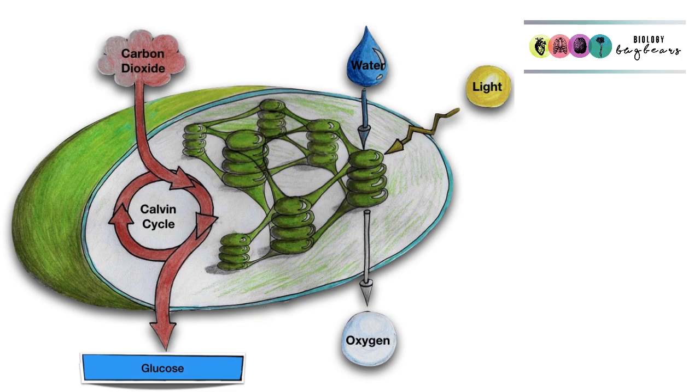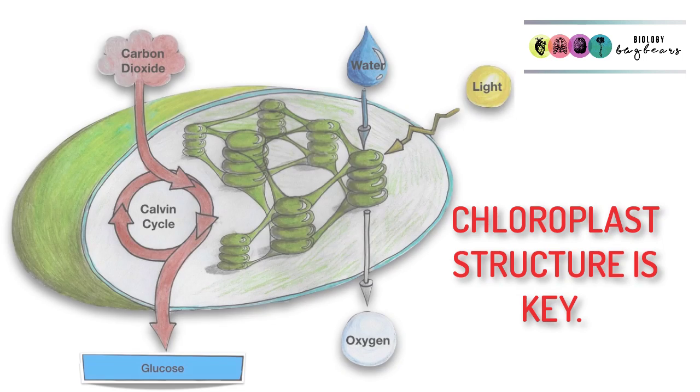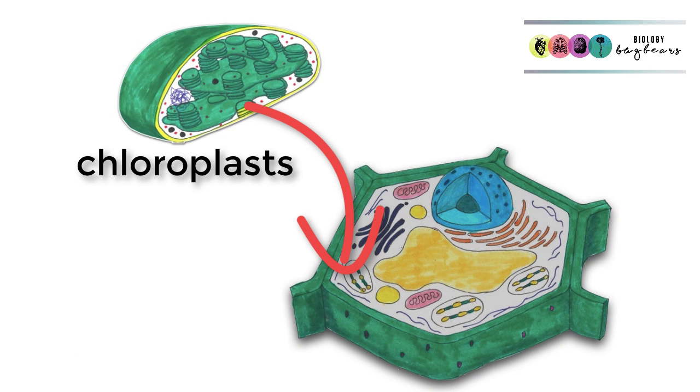Let's go into the specifics of what happens in photosynthesis. The trick to this is knowing the structure of the chloroplast really well. Plant cells have these structures known as chloroplasts, and this is where photosynthesis takes place.